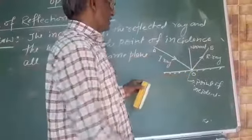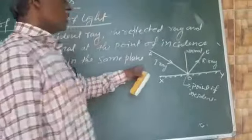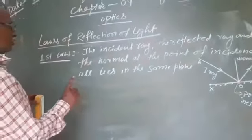All lie in the same plane. This is the first law of reflection of light.